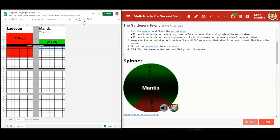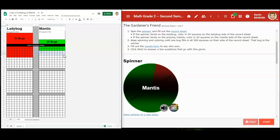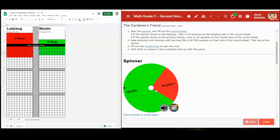For this spin it looks like the mantis won, so we're going to highlight those squares and color them green for the mantis. Spin again and I want to know which bug is going to win first. It looks like the mantis won again.